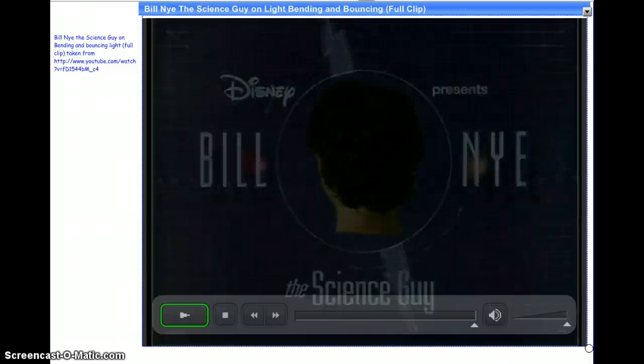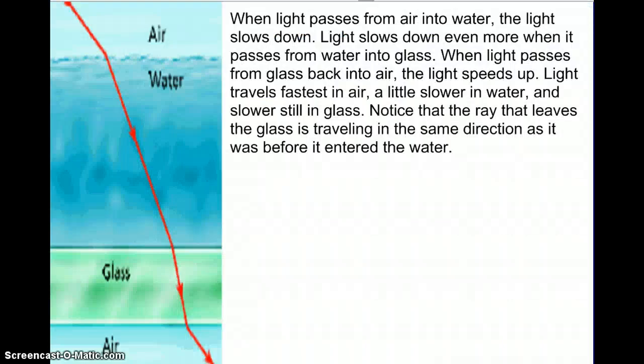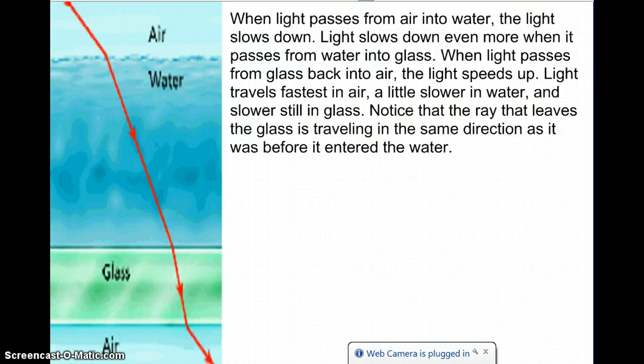All right, we all missed that theme song. So, what's happening is that light is changing its speed. And when light changes its speed, it refracts, it bends. So, when light passes from air into water, the light slows down, okay? Air to water, so it bends.